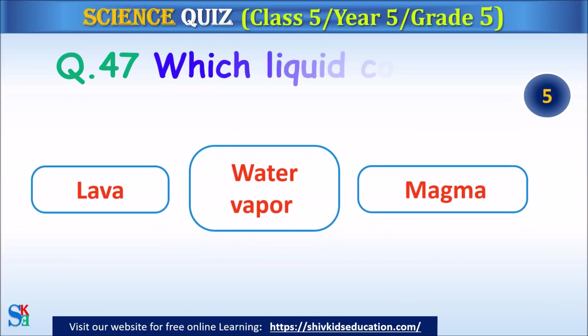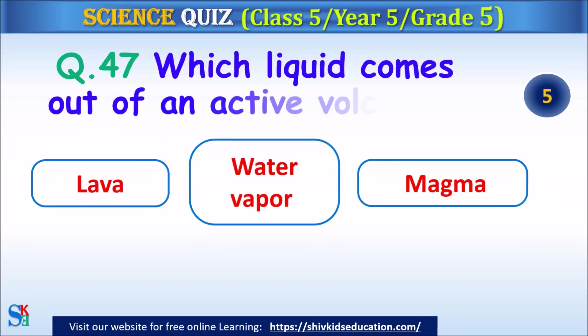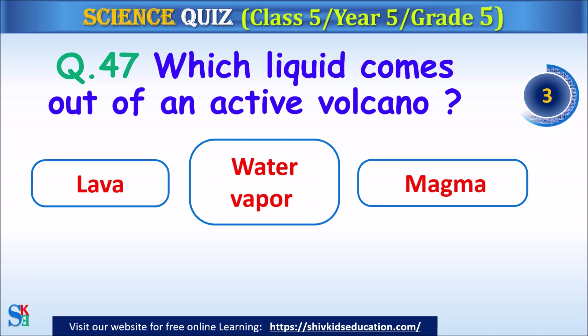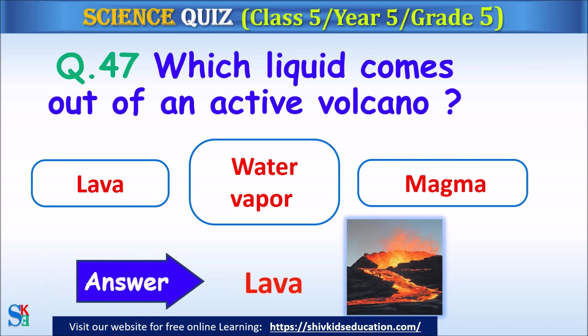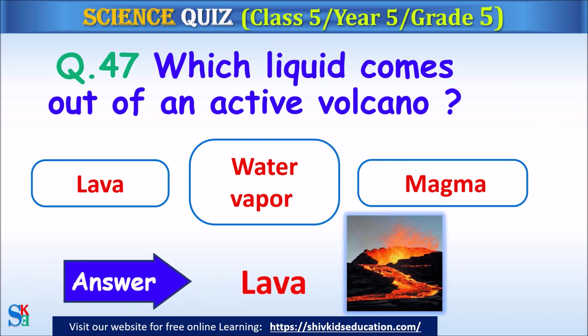Question 47: Which liquid comes out of an active volcano? Lava, water vapor or magma? The answer is lava.